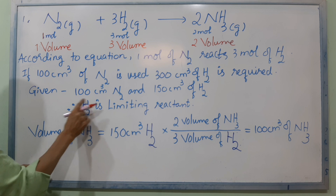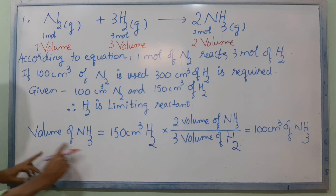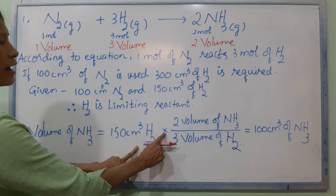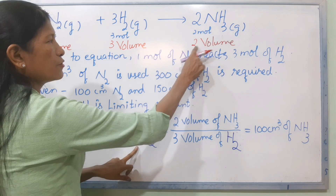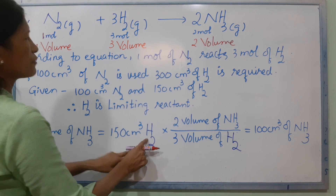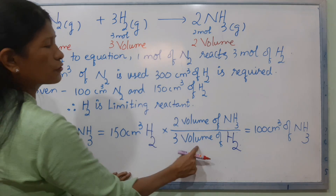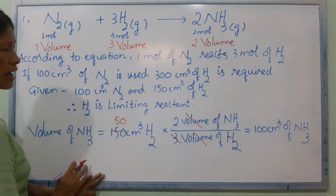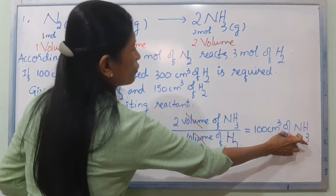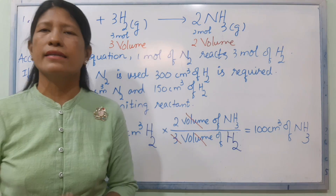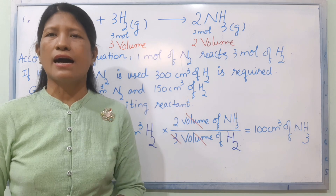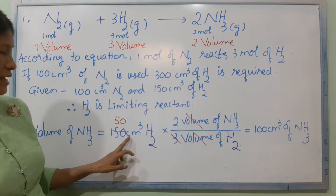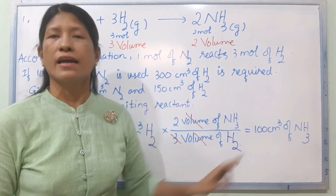In the limiting reactor, we know how to use it. Using hydrogen 150 cm², we use the equation for ammonia. Two volumes of ammonia, three volumes of hydrogen. This is 100 cm² of ammonia, right?